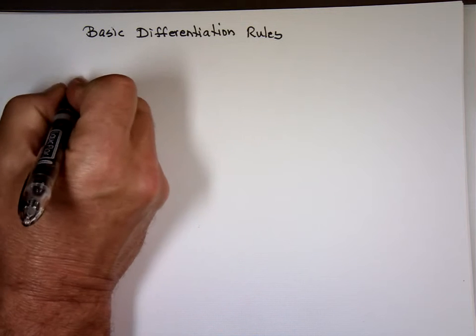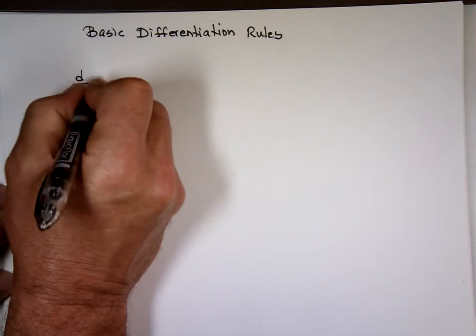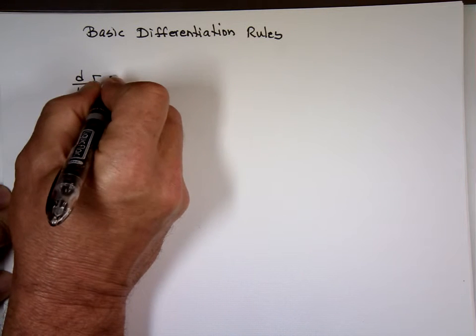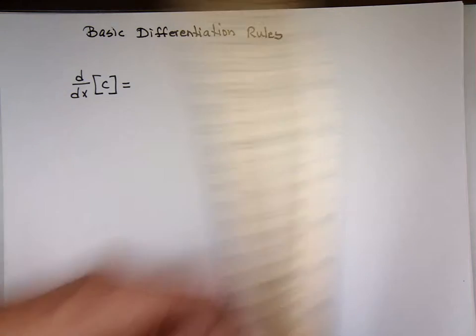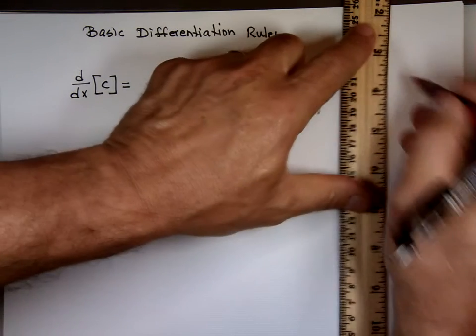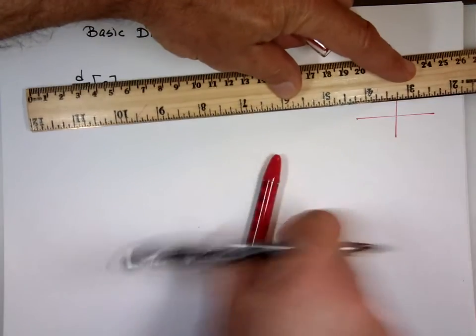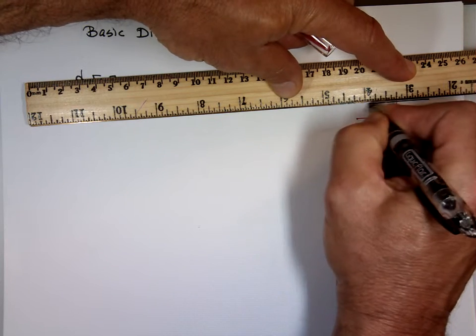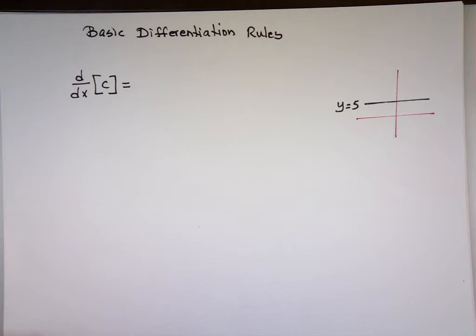First one: the derivative of any constant. C is constant. The derivative of any constant is what? In case you forgot, let me refresh your memory. There's a constant — let me give you one. Y equals 5. What's the derivative of that?